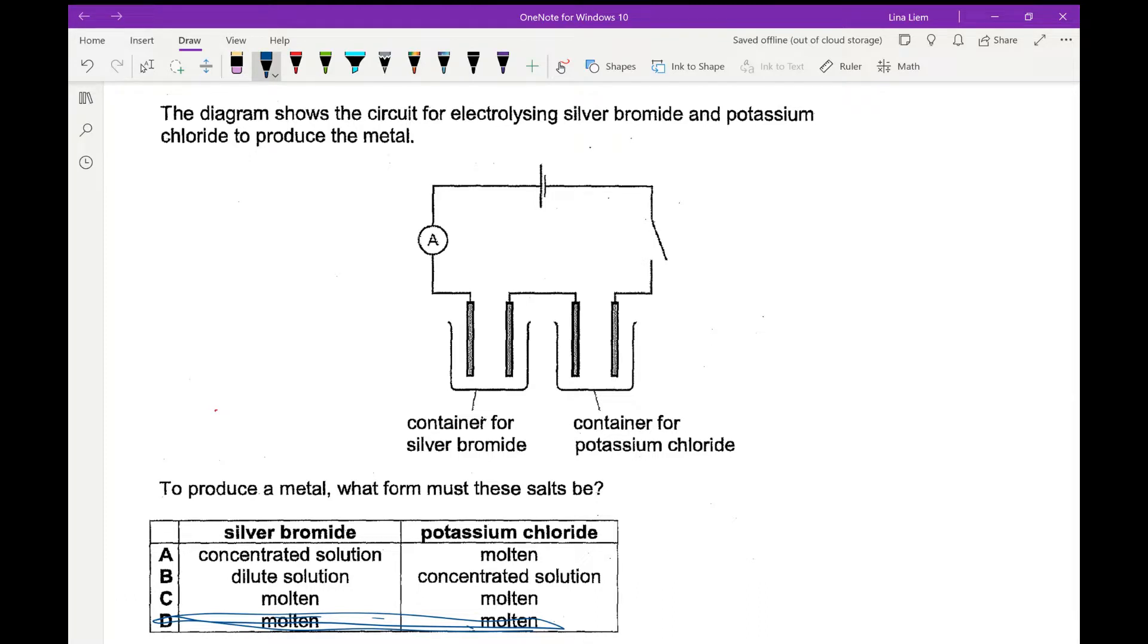If you want to extract metals, very reactive metals, you need to electrolyze the molten salt. For example, potassium here is more reactive than hydrogen, so you cannot have a competition between potassium and hydrogen ions. Because if there is hydrogen ion present, then hydrogen gas will be produced instead of the potassium that you want. So definitely for potassium chloride you want it to be molten.